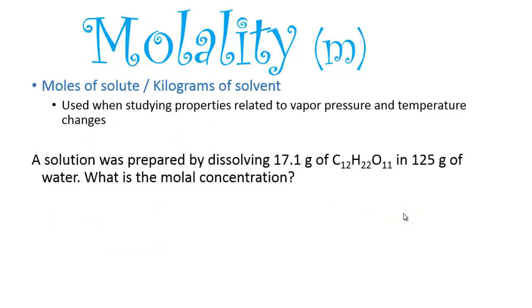So the second way we can look at concentration is by looking at molality. Molality is little m. So there's our difference. Molarity is going to be capital M. Molality is going to be the small m. So you've got to watch for that in the problems. What kind of m are they giving you? So the equation starts out the same. We're still moles of solute. But what is different is that on the bottom, instead of liters, we're at kilograms of solvent.